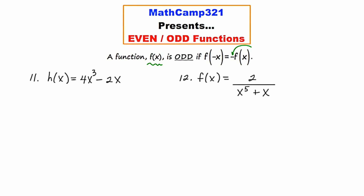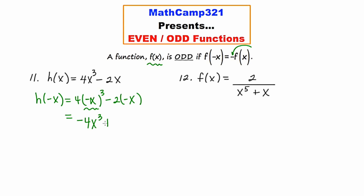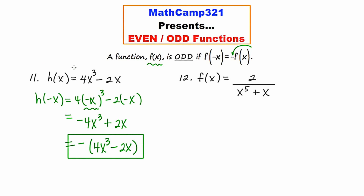Let's take a look at number eleven: h of x is equal to negative 4x cubed minus 2x. I'm going to start by replacing every occurrence of x with negative x. Negative x cubed is negative x times negative x times negative x — you can think of this negative as negative one, and negative one cubed is just negative one. So this ends up being negative x cubed, and times the 4 in front gives us negative 4x cubed. And then negative 2 times negative x is just going to be plus 2x. Now if I factor out a negative, I end up getting negative times the quantity 4x cubed minus 2x, which is exactly the opposite of what I started with.